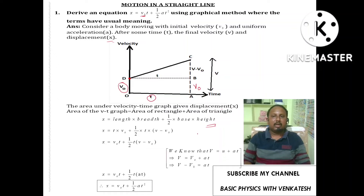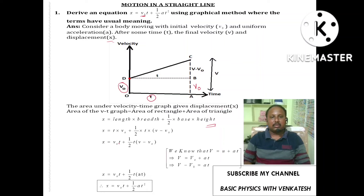The area of the rectangle is length times breadth, which is t times v-naught. The area of the triangle is one-half times base times height, which is one-half times t times (v minus v-naught). So x equals v-naught t plus one-half t times (v minus v-naught).